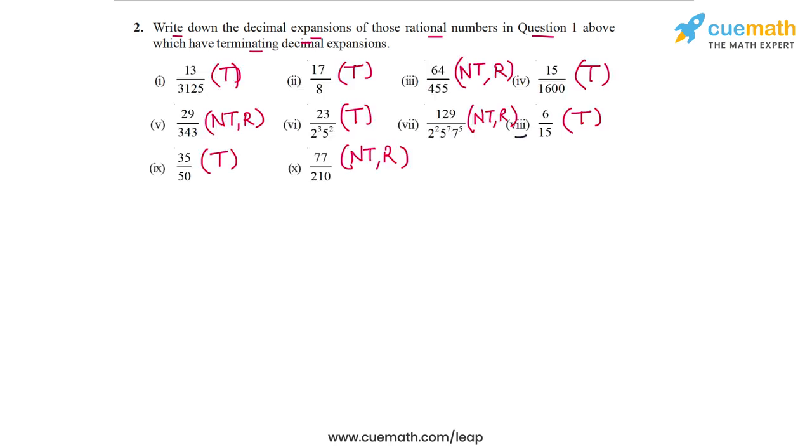Question 2 of this exercise says: write down the decimal expansions of those rational numbers in question 1 which have terminating decimal expansions. This question relies on the numbers given in question 1, so if you want you can go back to question 1 and take a look at all the numbers given. Let's take a look at those numbers again and what we had concluded about each one.